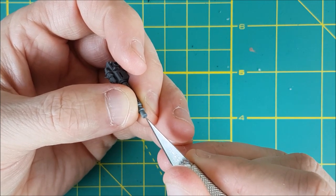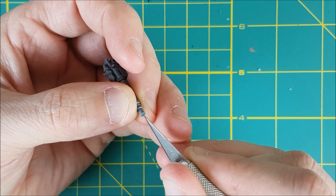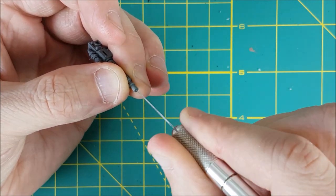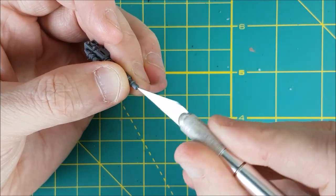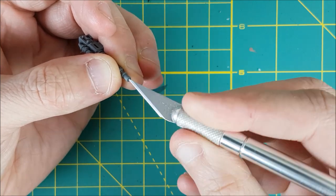Without applying any pressure except enough to keep the blade in place, twist the knife with your fingers to burrow a tiny hole. It does not have to be very deep, just enough so that the drill bit has a place to sit.